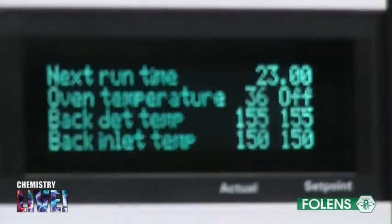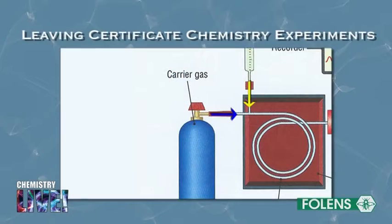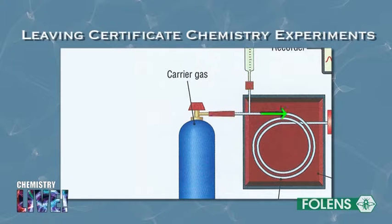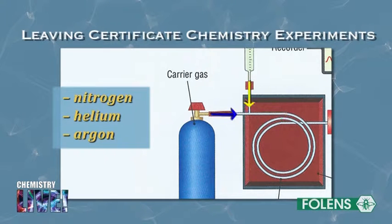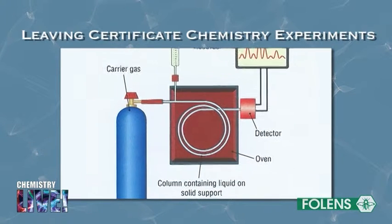The sample is vaporised and is carried through the tube using an unreactive gas such as nitrogen, helium or argon. The gas is commonly called a carrier gas as it carries the mixture through the hot column.